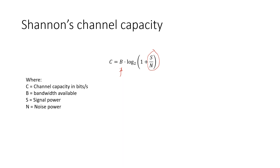The signal-to-noise ratio in this formula needs to be represented in linear terms. So if you're given values in logarithmic terms, you need to first convert those to linear terms. Also note that the log in Shannon's formula is log base 2 rather than the normal log base 10, so we have to be careful how we calculate our log base 2s. That's one of the first things we're going to look at — how you calculate log base 2 of some number.